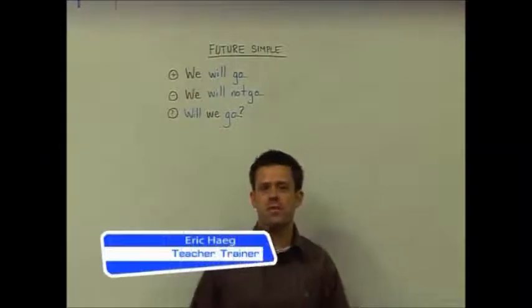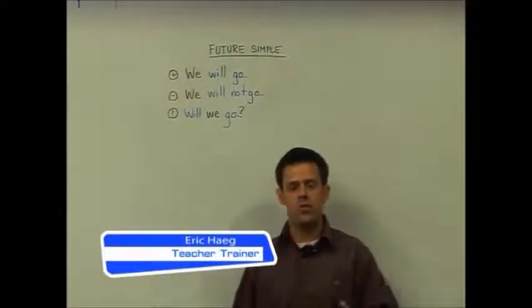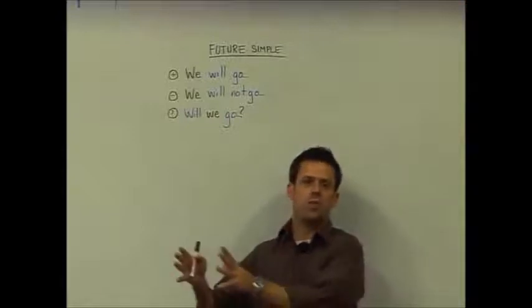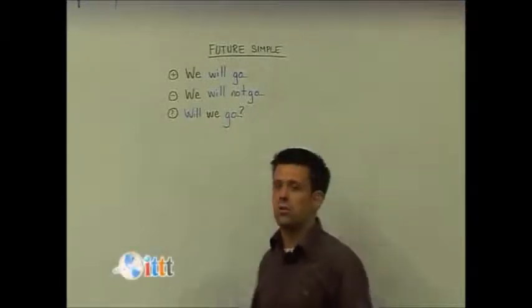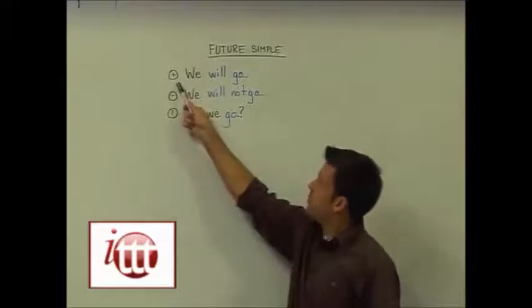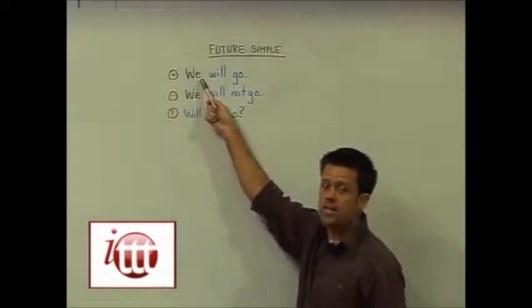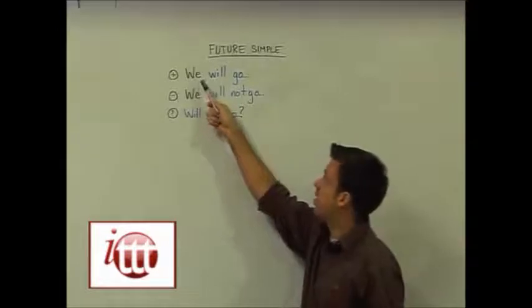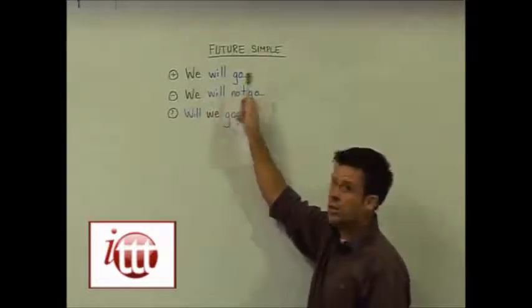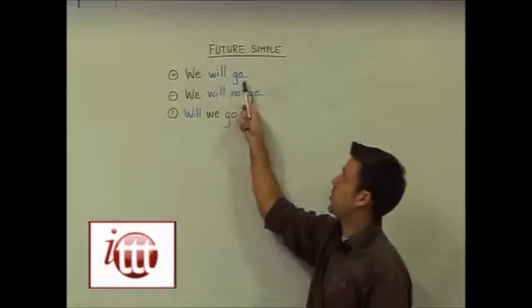Now, let's look at the future tenses. We'll focus first on the future simple tense. The future simple tense is used to indicate actions in the future. In order to form these, at least for the positives, we use our subject first — it could be any subject you like. Here we're using 'we,' followed by the word 'will' and our main verb 'go.' We will go.